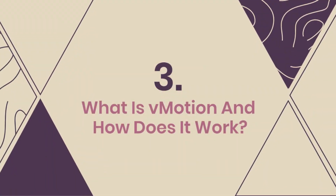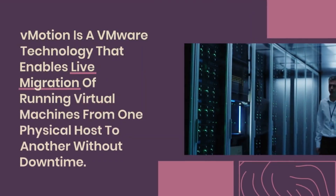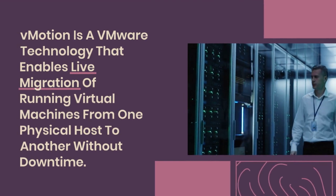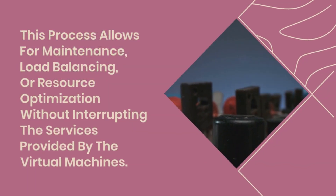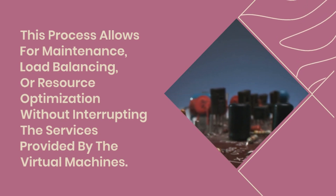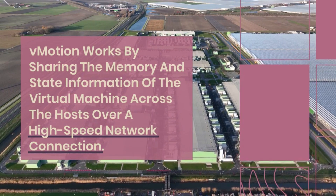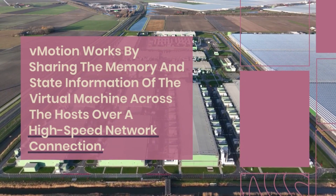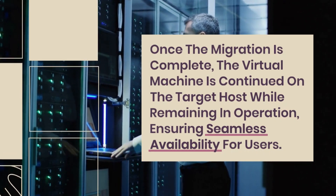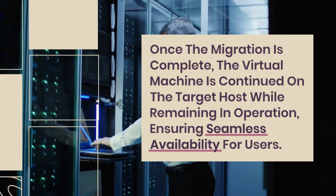Question 3: What is vMotion and how does it work? vMotion is a VMware technology that enables live migration of running virtual machines from one physical host to another without downtime. This process allows for maintenance, load balancing, or resource optimization without interrupting the services provided by the virtual machines. vMotion works by sharing the memory and state information of the virtual machine across the hosts over a high-speed network connection. Once the migration is complete, the virtual machine continues on the target host while remaining in operation, ensuring seamless availability for users.